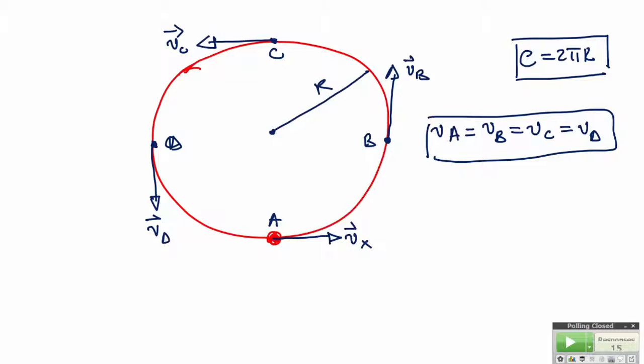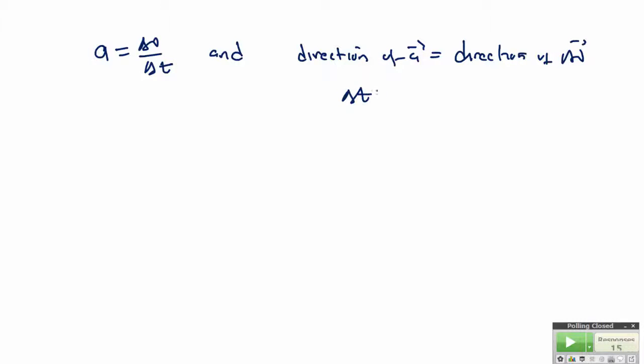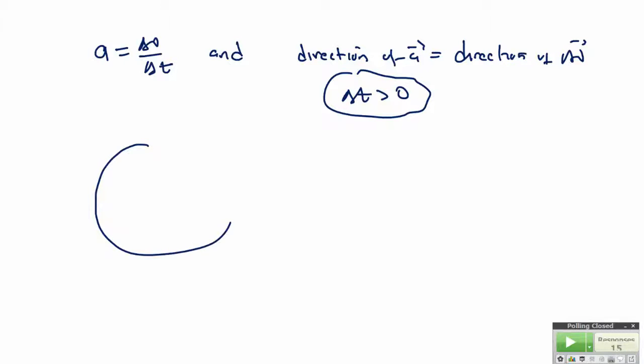If the object accelerates, what is the direction of that acceleration? To determine that, we use vector addition. Recall that acceleration a equals dV over dt, and the direction of a is the same as the direction of delta V, since delta t is always positive. Consider the same circle: if the object is initially at one point with velocity VI, and after a very short time it is at another point with velocity VF, then the change in velocity is delta V equals VF minus VI.